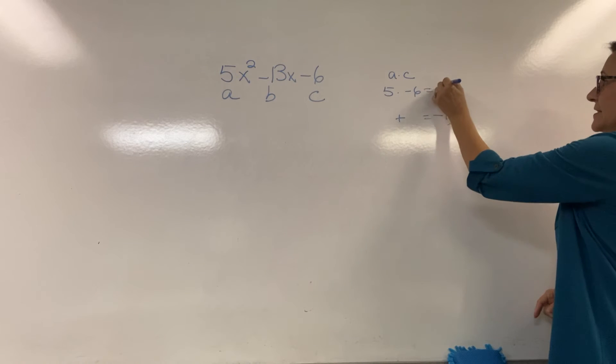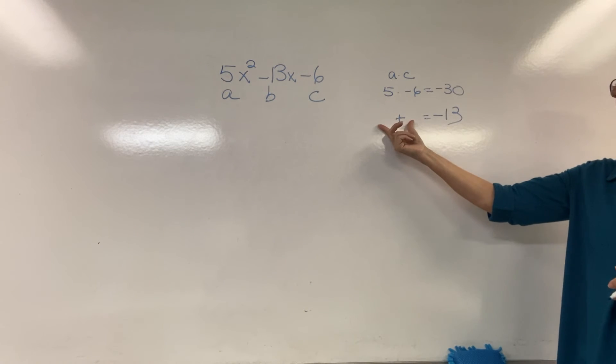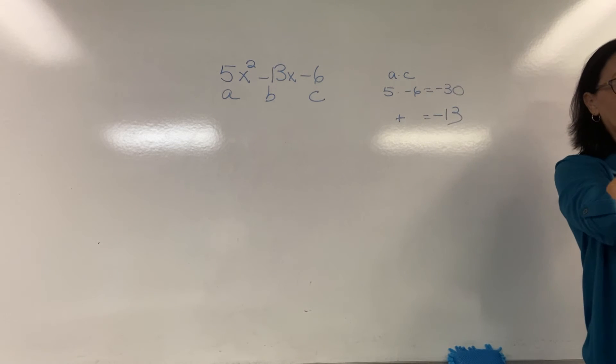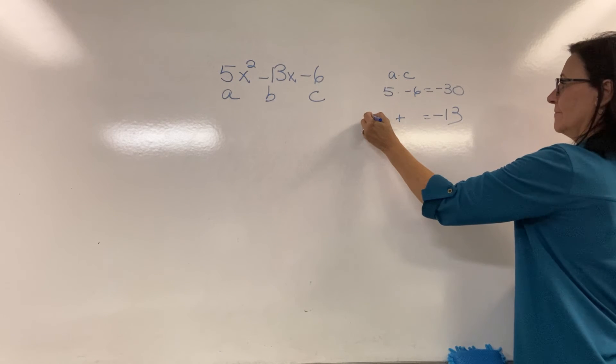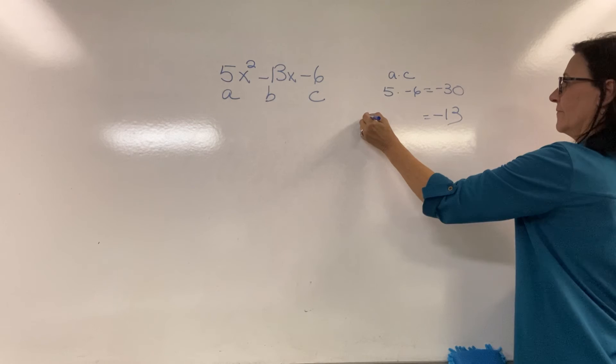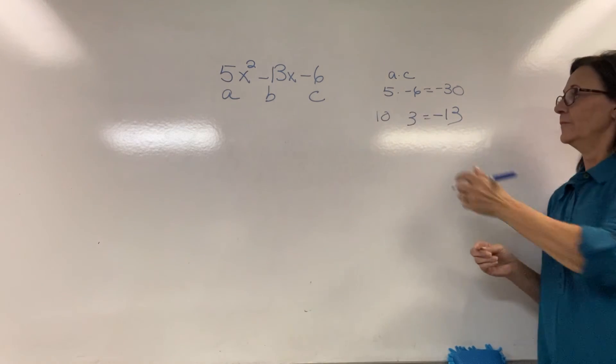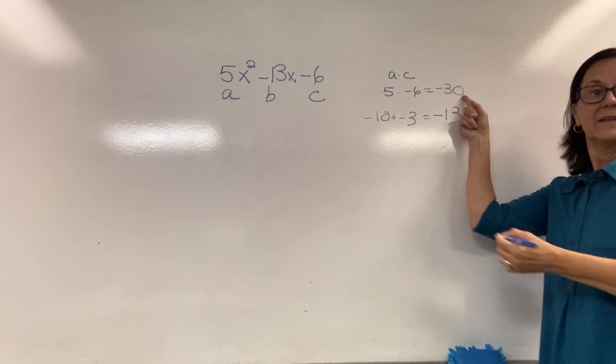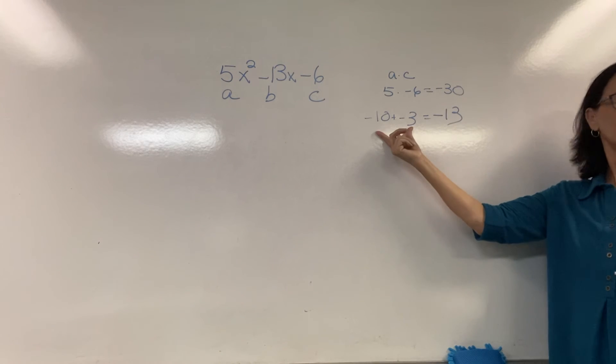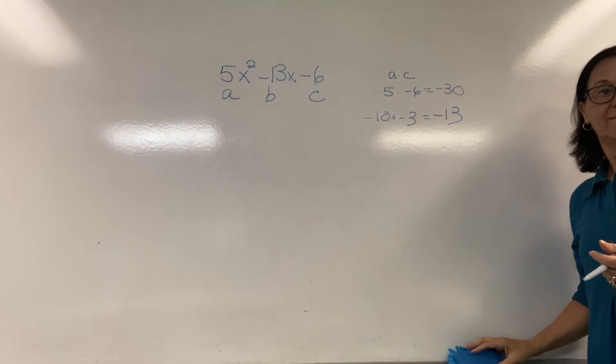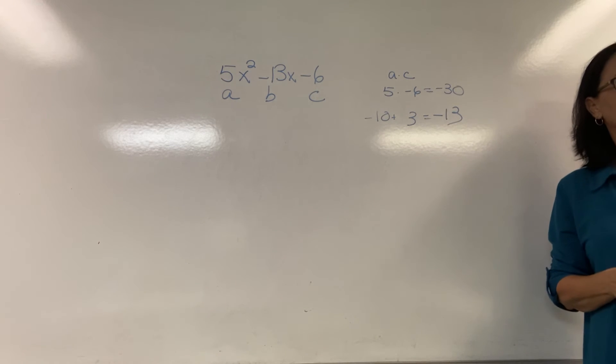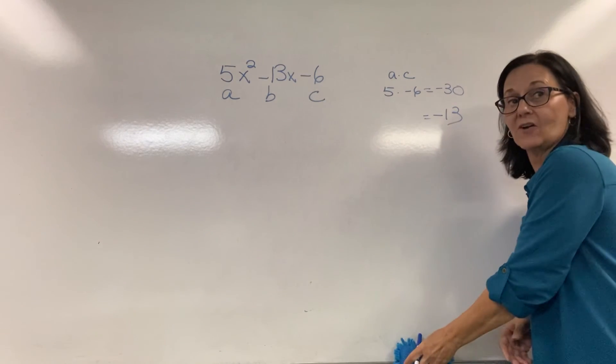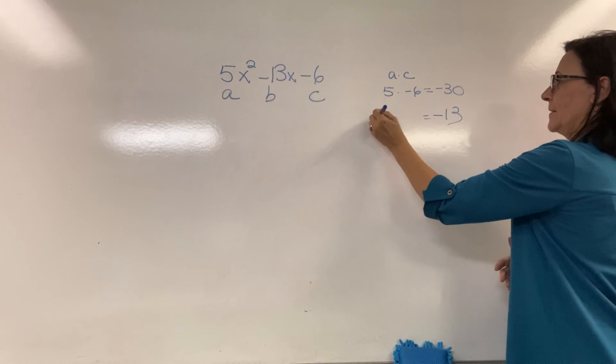A times c, that's the 5 times the negative 6, so that's negative 30. And when we add the factors that multiply to negative 30, what are they? It is 10 times 3 again, and it would be negative 10 and positive 3. Wouldn't they both be negative? No, because it doesn't add. A negative times a negative would give me a positive 30. Even though that was a good start, it's 15 times 2. It's negative 15 times positive 2.